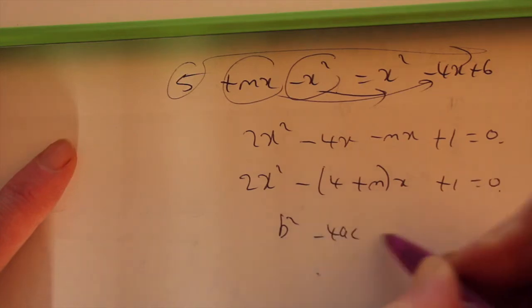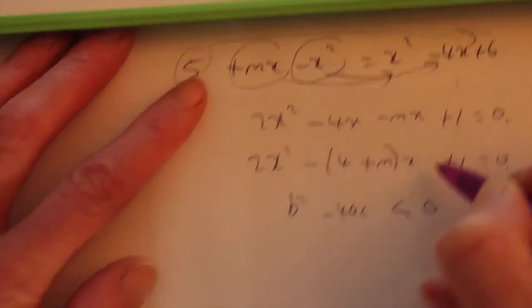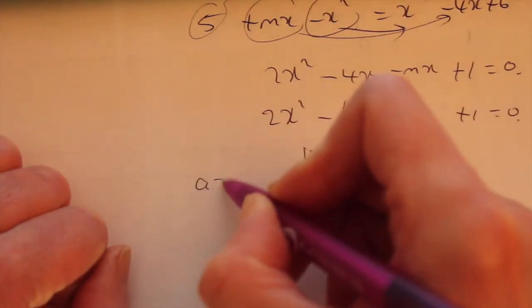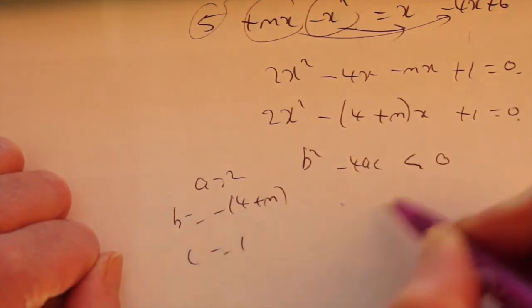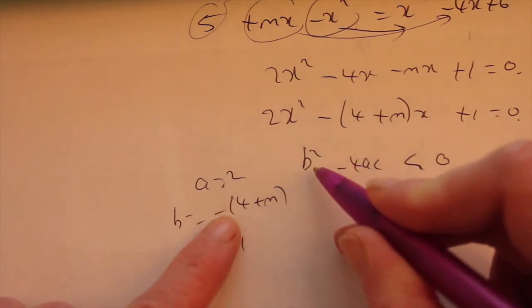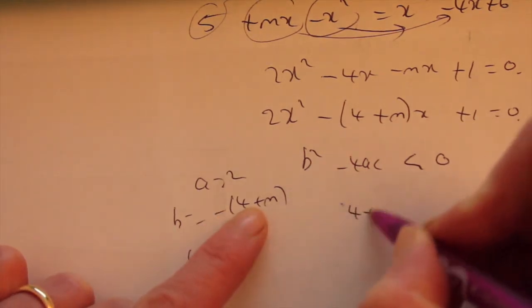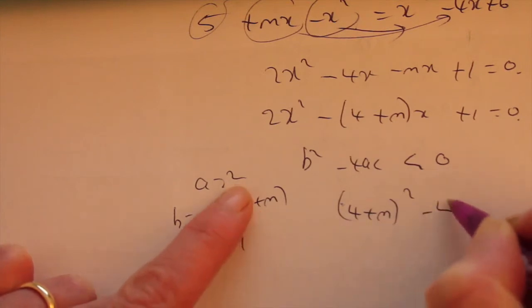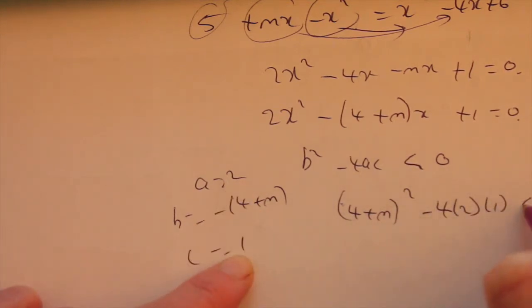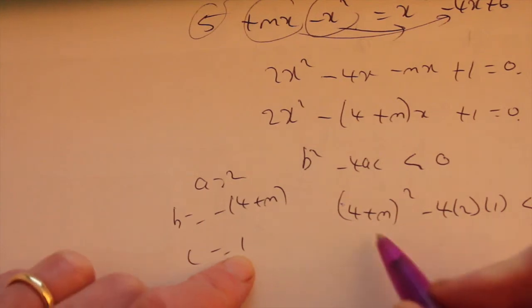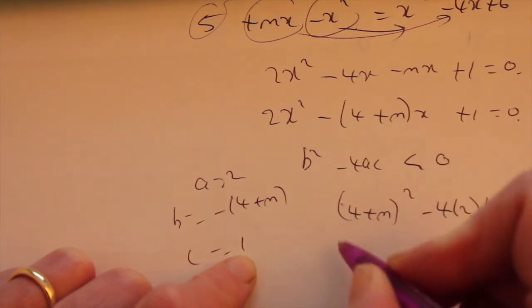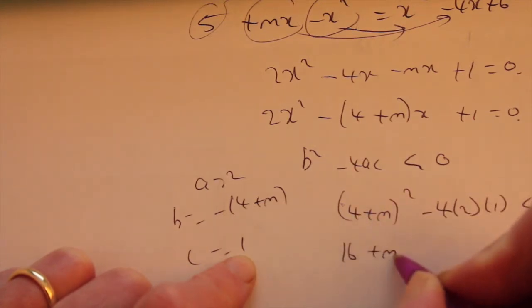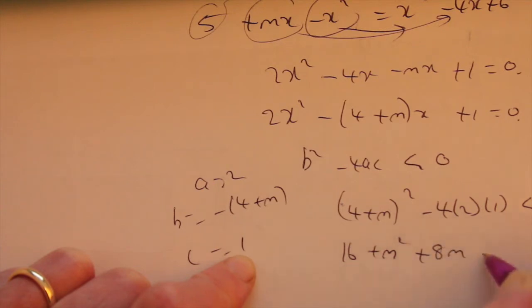So B squared minus 4AC is less than 0. Your A is 2. Your B is minus 4 plus M. And your C is 1. So putting that in. B squared minus squared becomes positive. 4 plus M squared minus 4 times A times C. You could multiply this out either the long way or the short way. I'll just go for the short way. Square the first. Square the last. And double the product. Minus 8 less than 0.